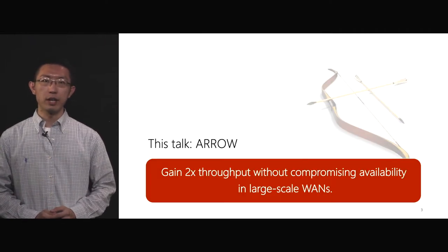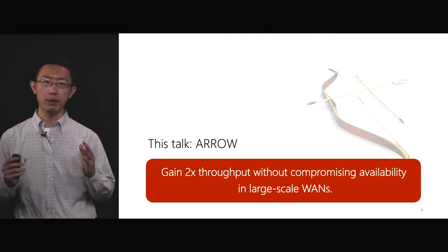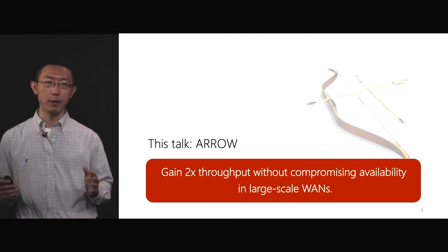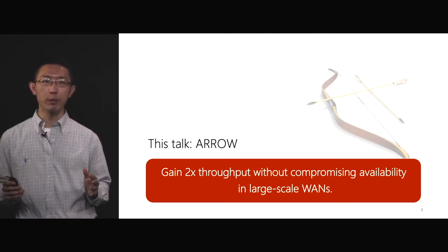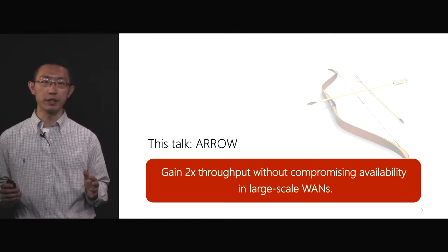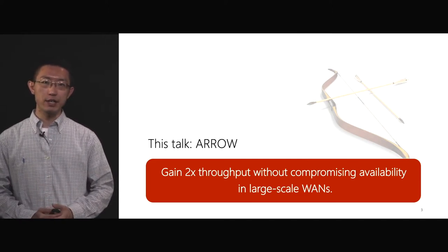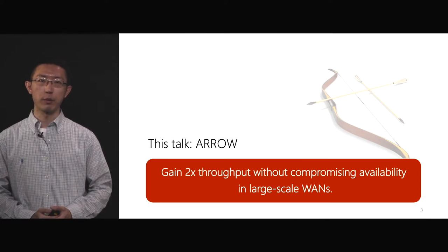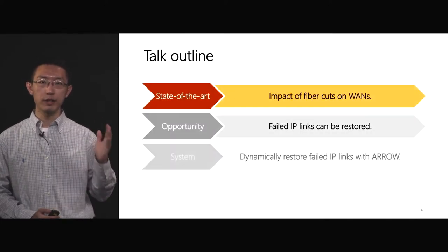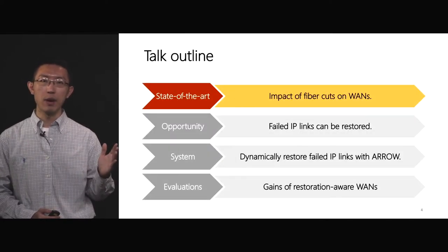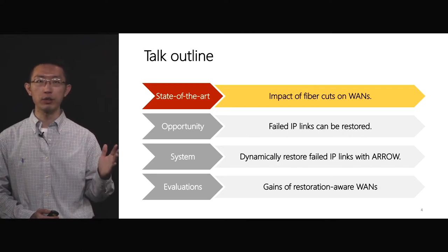In this talk, I will present a novel system that improves the network throughput by a factor of two without compromising availability in large scale WANs. But this is not easy. It is very challenging to squeeze more throughput from a globally deployed network. In the following slides, I am going to walk you through several important building blocks to achieve this goal.